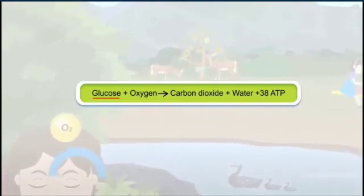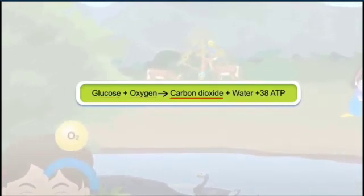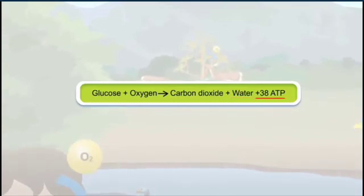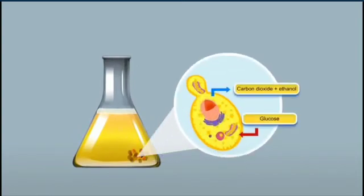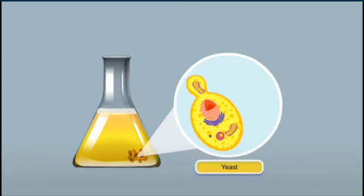During anaerobic respiration, glucose is partially broken down into ethanol and carbon dioxide. Hence, only two ATP molecules are formed. Yeasts and some bacteria carry out anaerobic respiration.